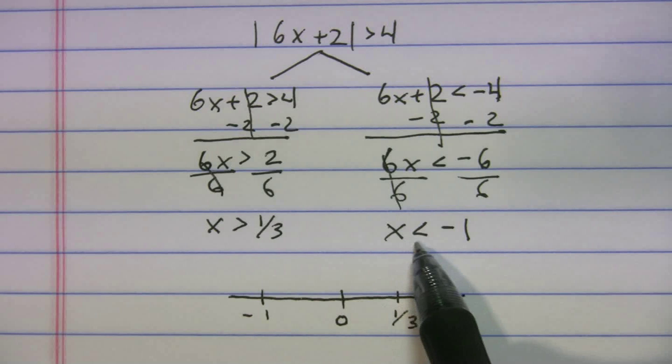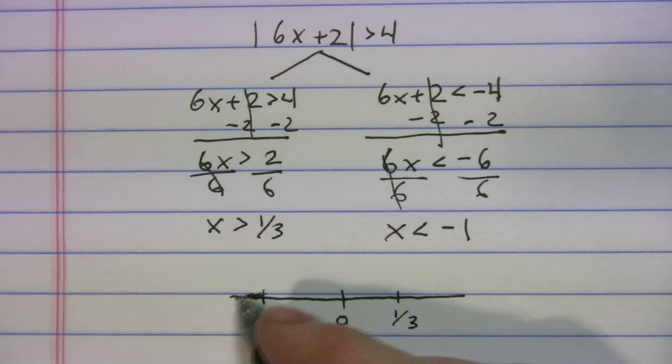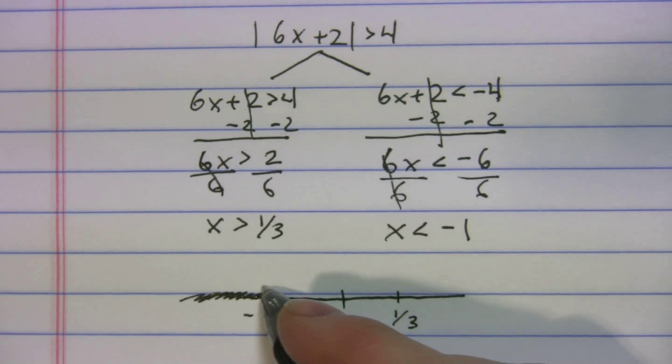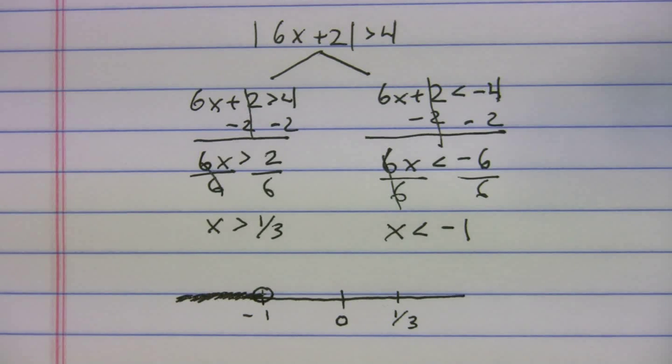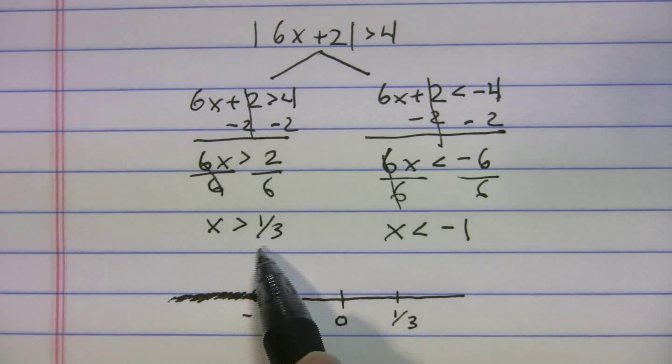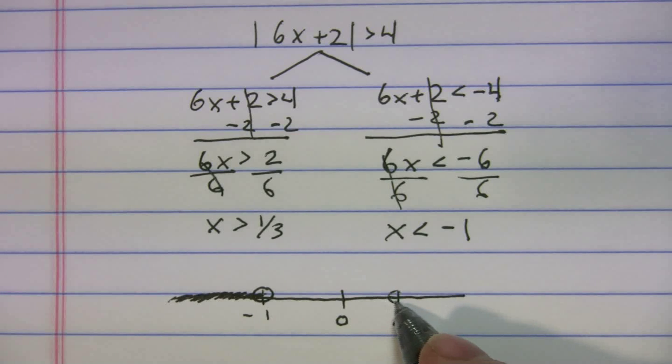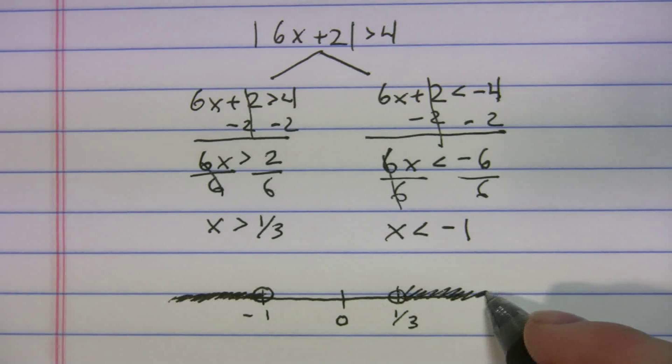So x is less than -1. Less is to the left. And it's going to be an open circle. It's less than. It never equals -1. So it's everything to the left. x is greater than 1/3. It never equals 1/3. So it's an open circle and everything to the right.